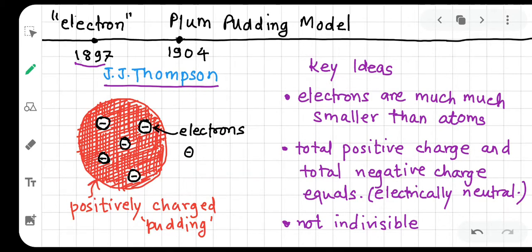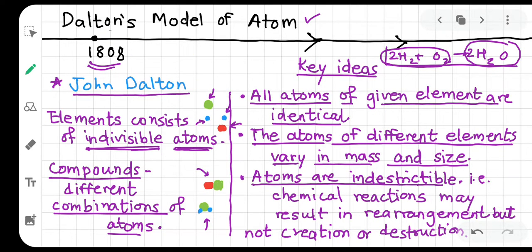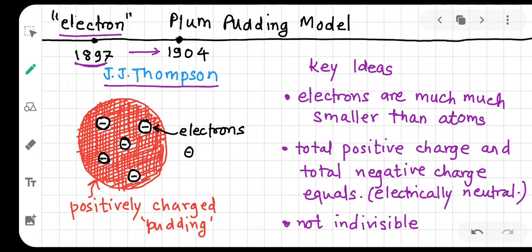J.J. Thomson discovered the electron in 1897. He discovered the electron particle which is present inside the atom. After that, he proposed a new structure of the atom — the plum pudding model — since Dalton's solid sphere model said nothing about what was inside.